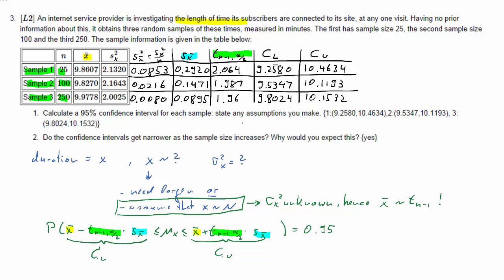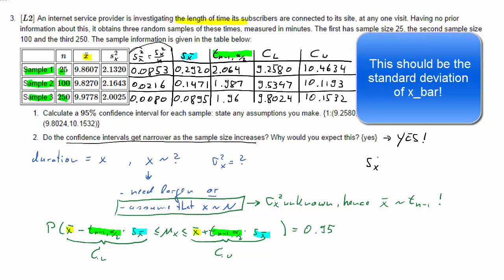So here are our three confidence intervals. We calculated the lower and upper bound. So the second question is, do these confidence intervals get narrower as the sample size increases? And the answer is obviously yes, if you look at the confidence intervals. And the reason for that is this: